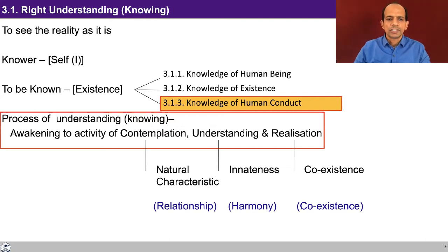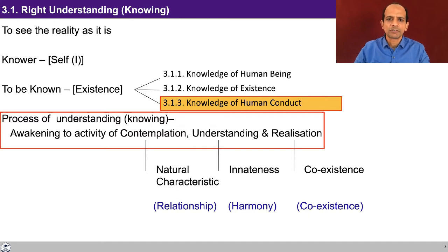We'll talk about knowledge of human conduct. To be known is the existence. When we go to explore what is to be known, there are three things: human being, existence, and the role of human being in this existence, which is termed as human conduct. The process remains the same — awakening to the activities of contemplation, understanding and realization. The content of contemplation is natural characteristic. The content of understanding is harmony, that is innateness. And the content of realization is coexistence, that is submergence.